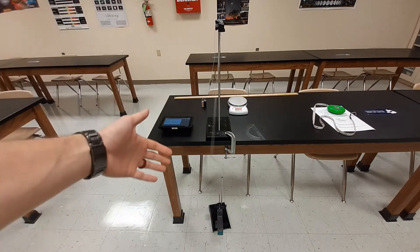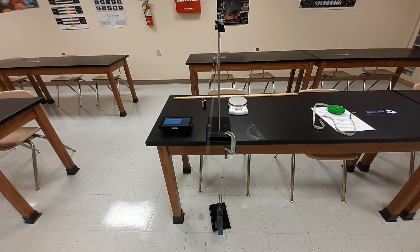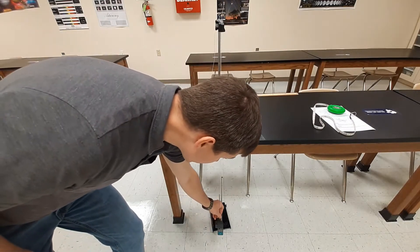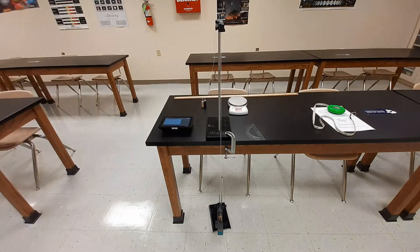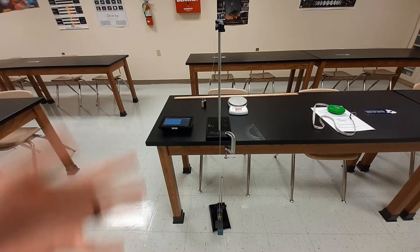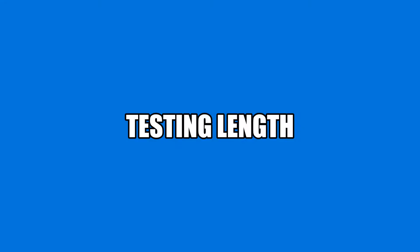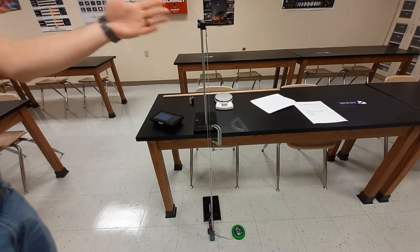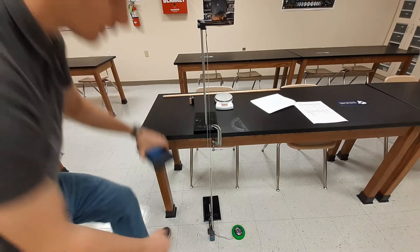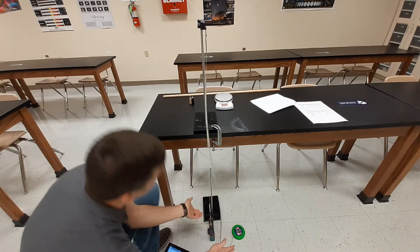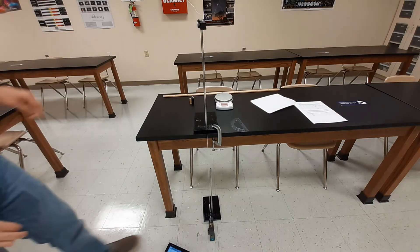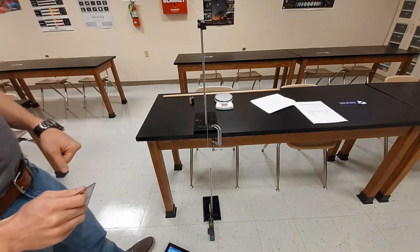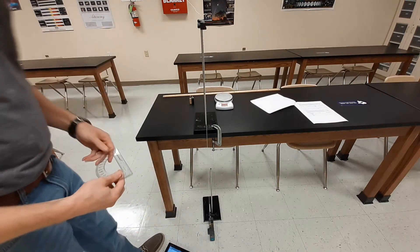Next we want to change the length of our string. For the length measurements we're going to use 15 degrees every time. We already have a measurement for a 1-meter length at 15 degrees, so you can take that measurement and put it on this next chart. I'm going to change this length now to 120 centimeters and start from there. At 120 centimeters — just about the maximum you can get in this room — we're going to use the brass pendulum and 15 degrees for all of these, so those variables will not change.